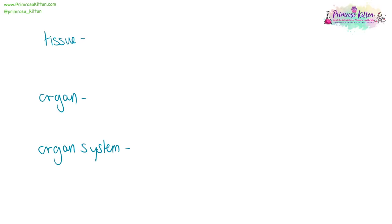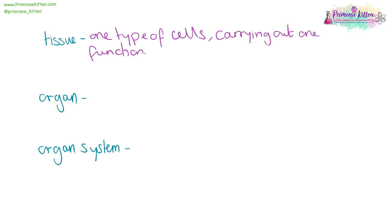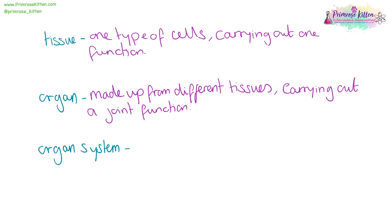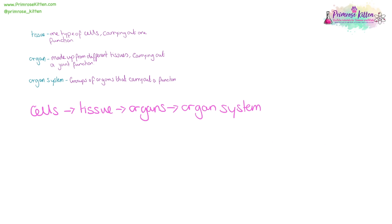You need to know the difference between a tissue, an organ, and an organ system. A tissue is one type of cell carrying out one function. An organ is made up from lots of different types of cells carrying out a joint function. And an organ system is a group of organs that work together to carry out a function. So our hierarchy is cells, tissues, organs, organ systems.